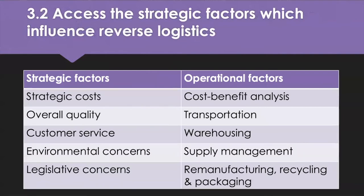Strategic factors that influence the design and implementation of reverse logistics need to be analysed. They are usually industry specific, but general factors include strategic-level considerations of costs, quality, customer service, environmental concerns and legislative concerns. Operationally, they include cost-benefit analysis, transport, warehousing, supply management, and remanufacturing, recycling and repackaging. Reverse logistics provides strategic cost savings — unlike quick-fix methods like laying off staff. Productivity is the measure of the ratio of outputs to inputs, and no supply chain can be productive without a systematic process to manage material movements. Reverse logistics can increase an organisation's productivity and profitability by using lower-cost inputs and unused inputs that would otherwise have been wasted.